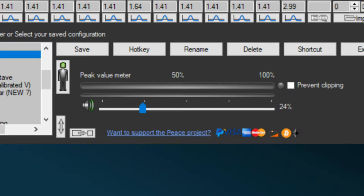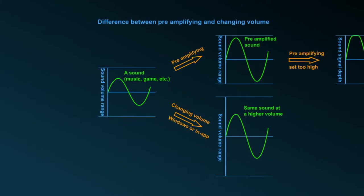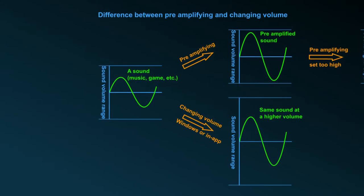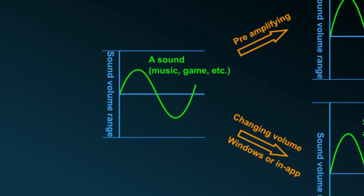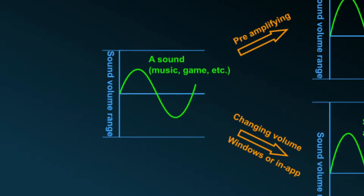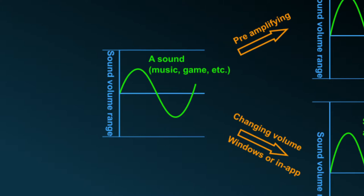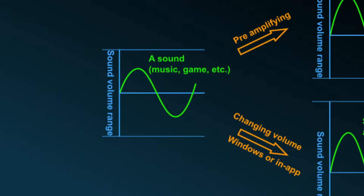Perhaps a good way to explain the difference between increasing the Windows volume and increasing the pre-amplification, is showing it in this image. Here you see a sound with a certain volume on the y-axis.